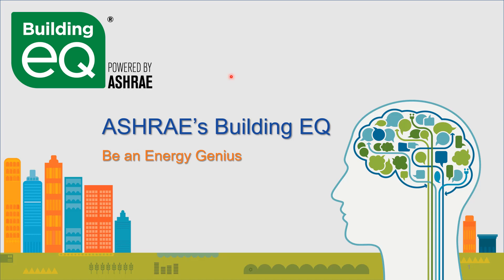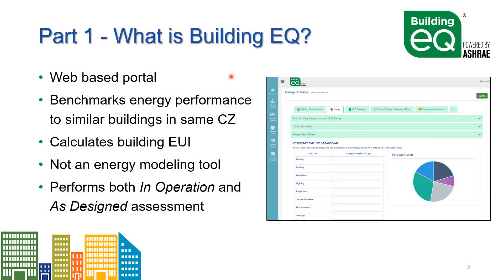Welcome to this online tutorial about ASHRAE's BuildingEQ web portal. In this episode, we want to explain what the BuildingEQ program is. It's a web-based portal where you enter in performance data about a building, and we rank the energy performance of that building against similar buildings in the same climate zone. In the background, we calculate an EUI — energy usage intensity — that's BTUs per square foot per year, and we compare that to other buildings of similar type in a similar climate zone to see if the building scores well or if there's room for improvement.